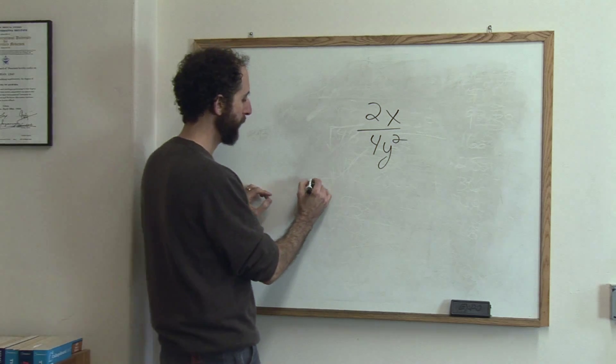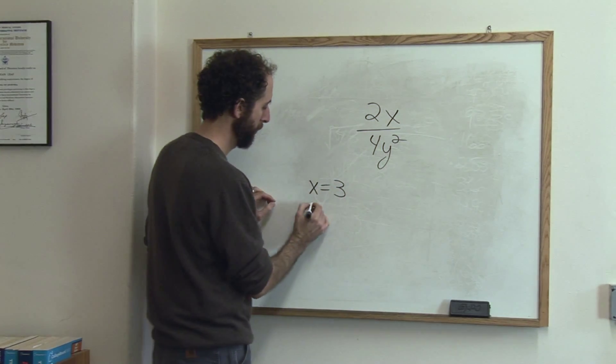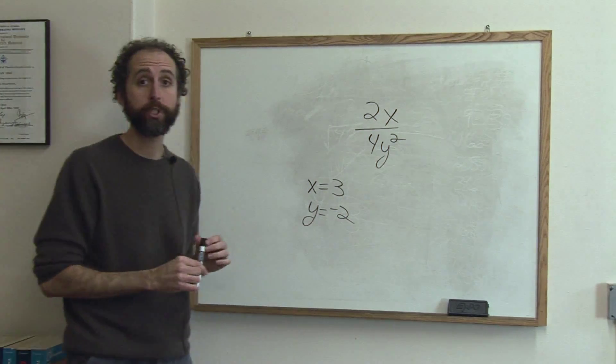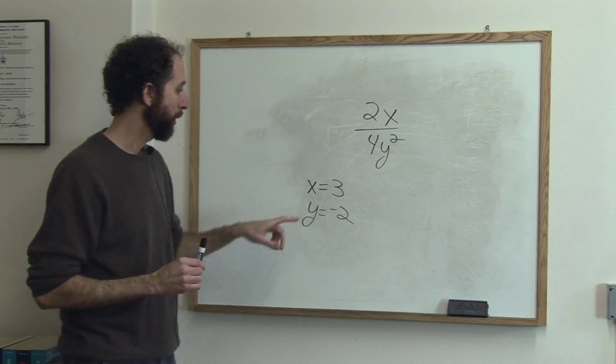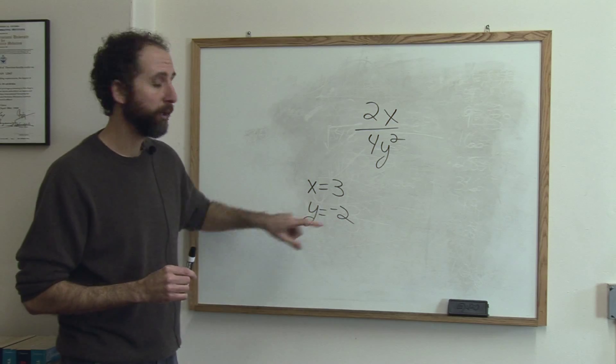So if we wanted to solve this, let's say we knew x was 3 and y was negative 2. We would solve this algebraic ratio. We would plug in 3 and plug in negative 2.